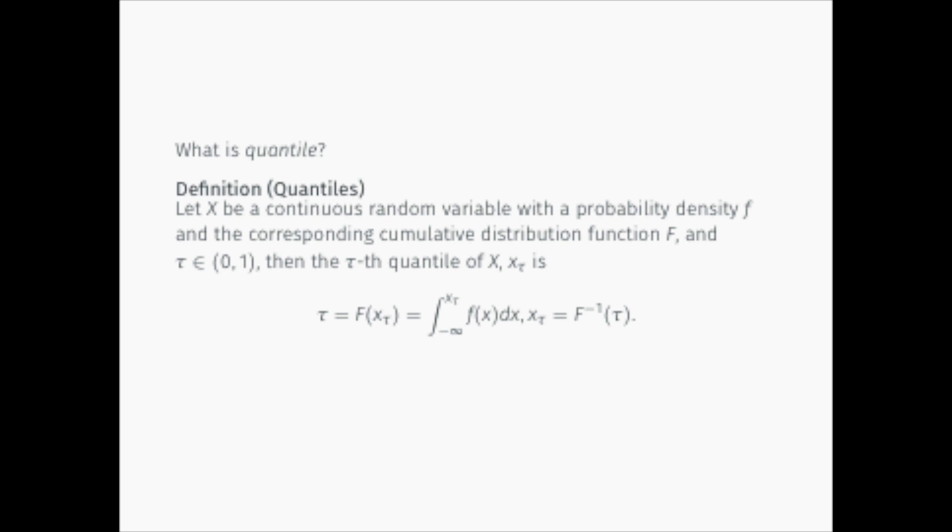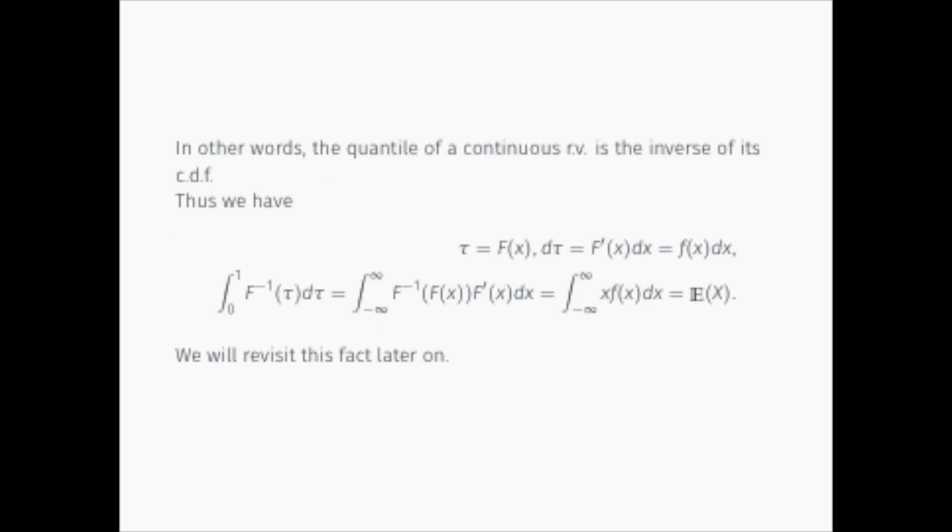Then, the tau's quantile, or percentile, of the random variable X is a value at which the CDF equals tau. In other words, the quantile is the inverse of the cumulative distribution function.